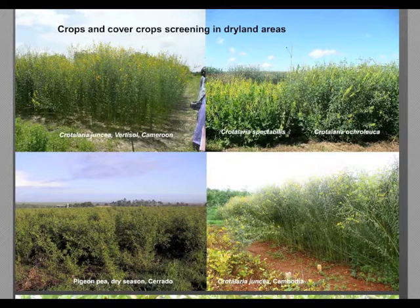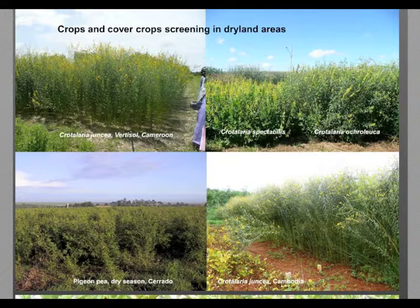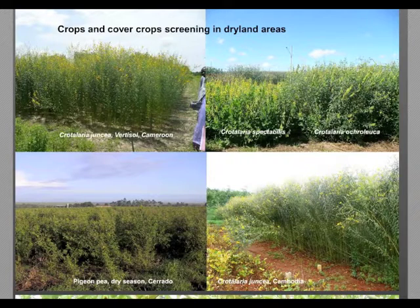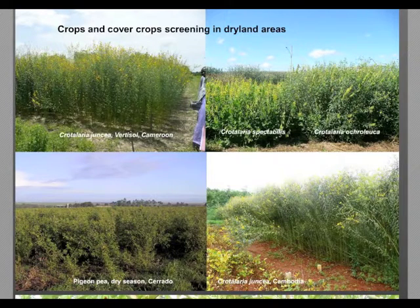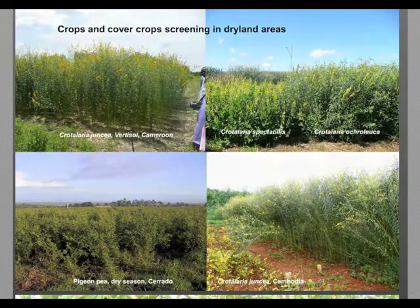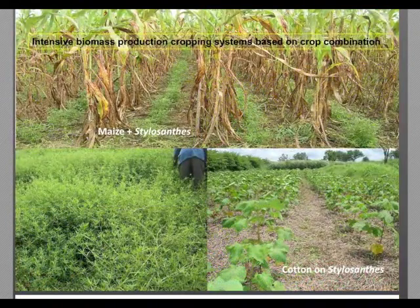Different cover crops have also been screened and suited in dryland areas. For instance, we can talk about Crotalaria species in Northern Cameroon. We have Crotalaria juncea, Crotalaria spectabilis, and Crotalaria ochroleuca, which in addition to being able to produce more biomass, will also provide more nitrogen to help reduce the competition effect of this association.